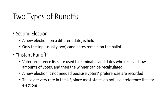In an instant runoff, we ask who was this person's second or third choice and use that to figure out who they would have voted for in a new election. So the new election isn't needed because we recorded every voter's full preference. This is pretty rare in the U.S. because most states do not use preference lists for elections, but if we have those preference lists, we can do this.